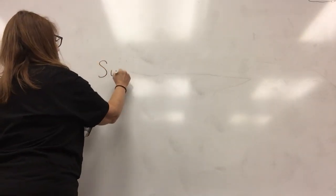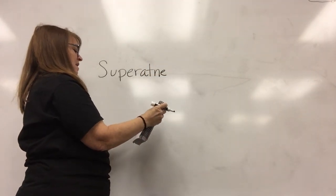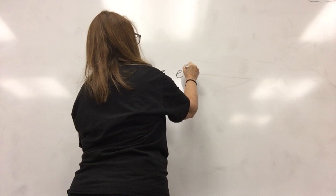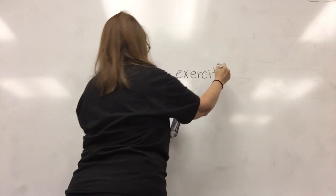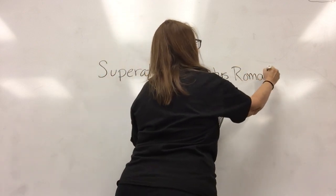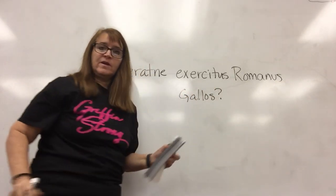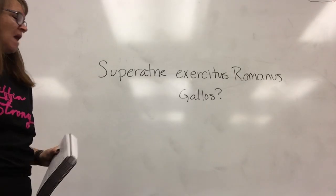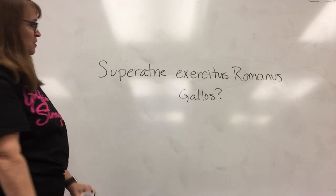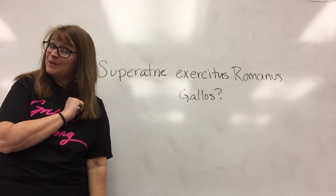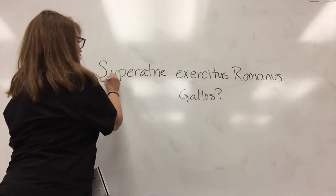Nine. Superotene. Exercitus — this is a hard word to spell — exercitus. I bet it's Romanos, and then Galos, question mark. So no compound sentence, I don't have to worry about that. No prepositional phrases, don't have to worry about that. So the first thing I'm going to do is find the verb. I can see right here: superot.